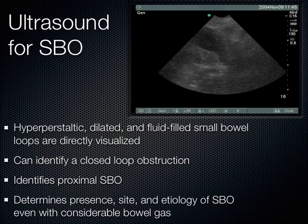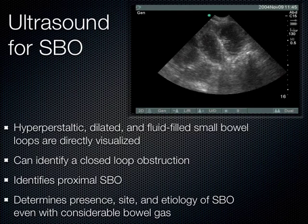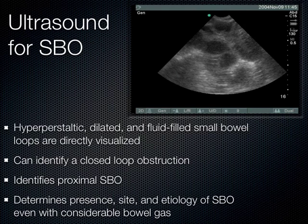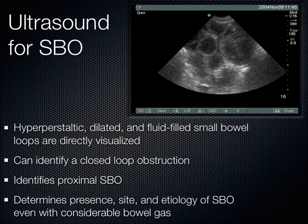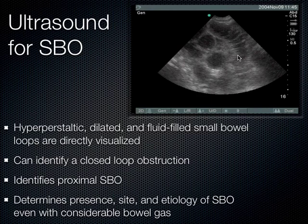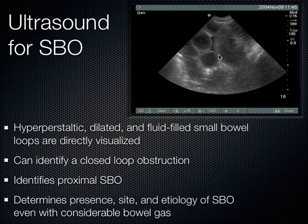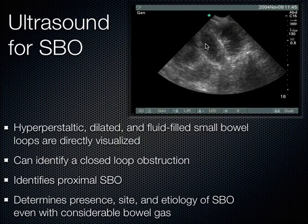What we see initially are hyperperistaltic, dilated, and fluid-filled small bowel loops directly visualized with ultrasound, evidenced by their plique circularis — that tells us this is indeed small bowel. In this patient there was such a bad small bowel obstruction there was perforation, and the fluid leaked out between the loops of bowel. Fluid is always black on ultrasound, and we can see these anechoic wedges of free fluid between different loops of bowel. You see a little wedge of fluid right there — sharp angles of free fluid wedging out between loops of bowel portend a pretty bad prognosis.